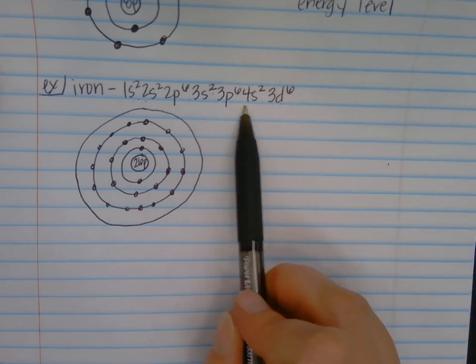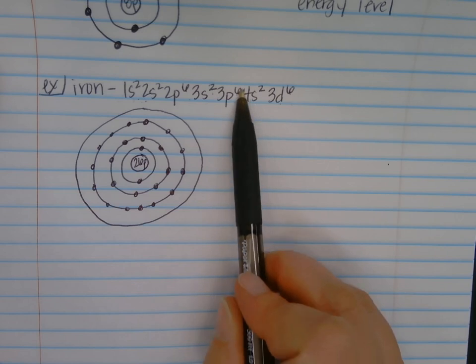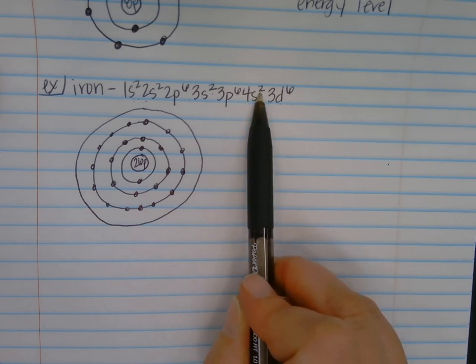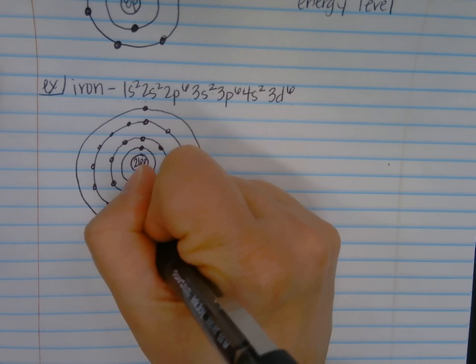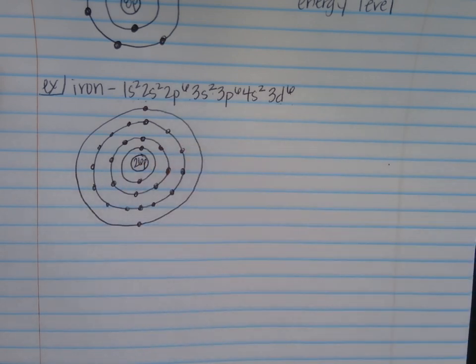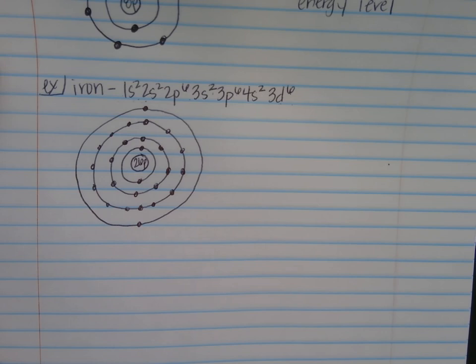Now for that fourth energy level, I only have 4s2 — so just 2 electrons from that s orbital. So 1, 2. That is the Bohr model for iron. When drawing Bohr models, we represent energy levels with rings around the nucleus, and then we use dots to represent electrons, based on the electron configuration.